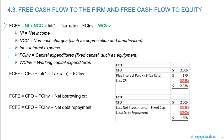This is a formula you need to memorize: free cash flow to the firm, FCFF, and free cash flow to equity, FCFE. The free cash flow to the firm is net income plus non-cash charges such as depreciation and amortization, plus interest times one minus the tax rate, minus capital expenditures such as equipment.